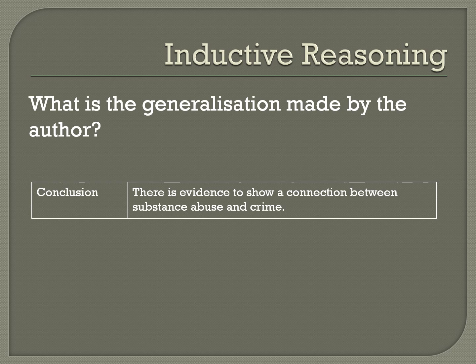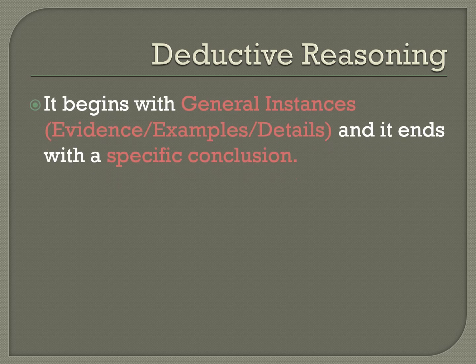Now let us move on to deductive reasoning. Deductive reasoning, on the other hand, begins with something general. The general statement is then applied to specific instances, which can consist of evidence, examples, or details. Towards the end, it derives a specific conclusion. Deductive reasoning is totally the opposite of inductive reasoning. If you cannot remember both, just memorize inductive reasoning, because whatever is true of inductive, deductive is totally the opposite. Study smart.